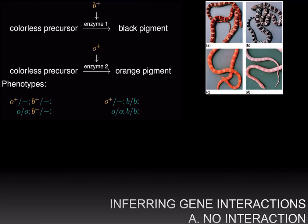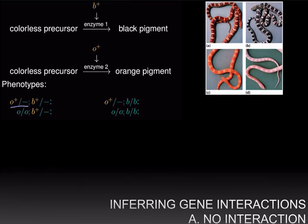Before we carry out the dihybrid cross and determine the phenotypic ratios, let's write down the phenotypes of different combinations of dominant and recessive alleles for both genes. If you have the dominant alleles of both genes — O+ and B+ — you will have the enzyme that makes orange pigment and the enzyme that makes black pigment. Both orange and black pigments will be made, and the phenotype will be camouflaged.